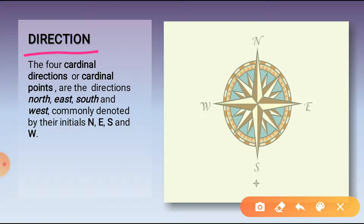The north arrow on a map shows the north direction. Once we know the north, we can easily find the other directions. North, south, east, and west are the four major directions. These are called cardinal points or cardinal directions.